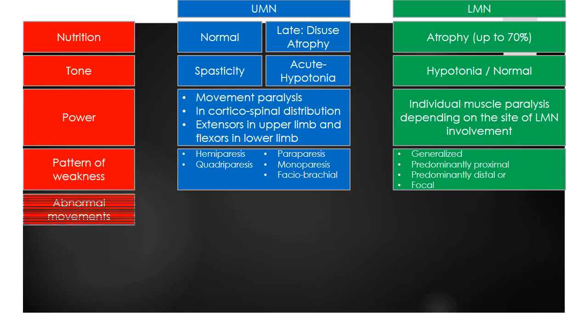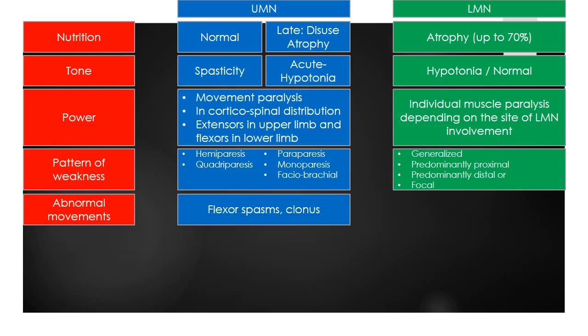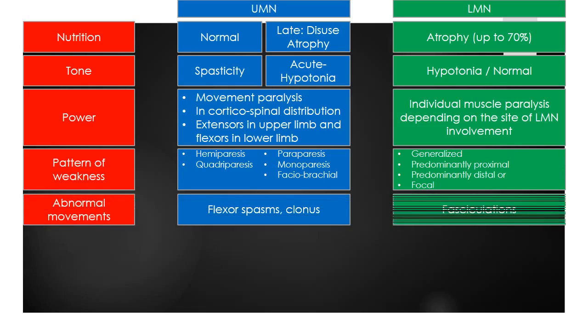Abnormal movements which can be seen in UMN lesions include flexor spasms or clonus. LMN lesions can cause fasciculations.